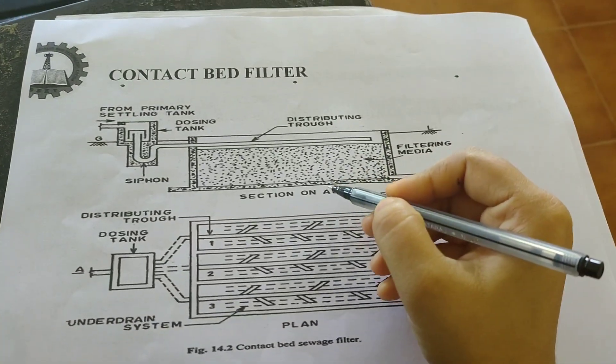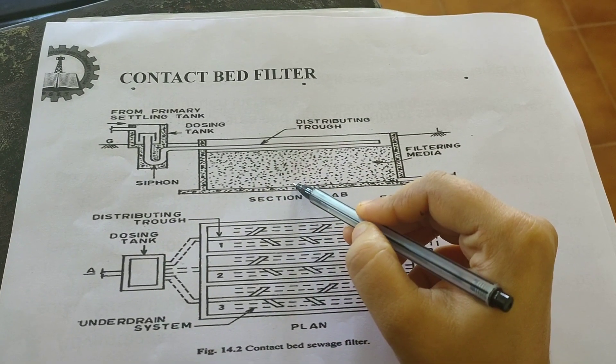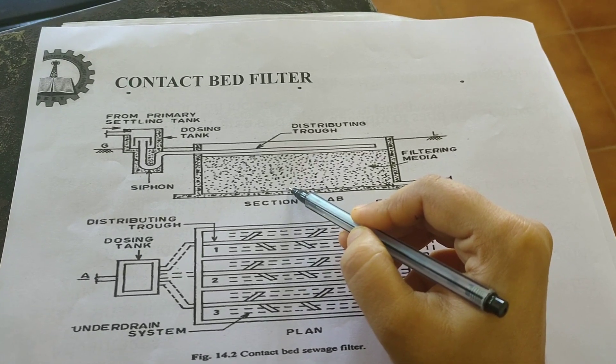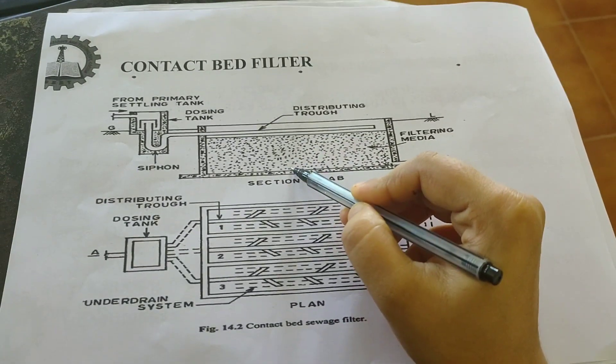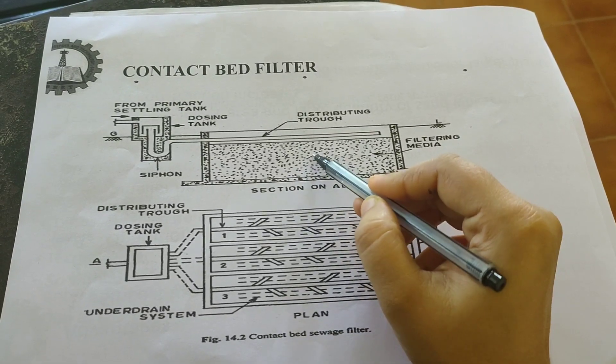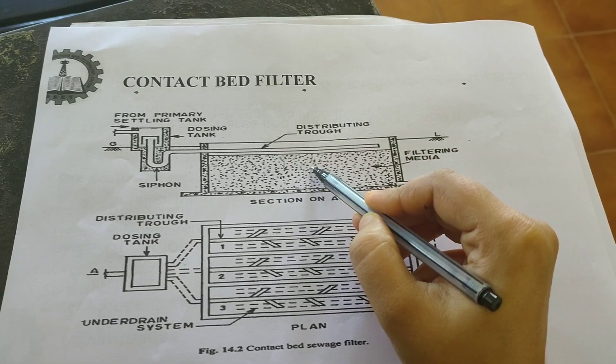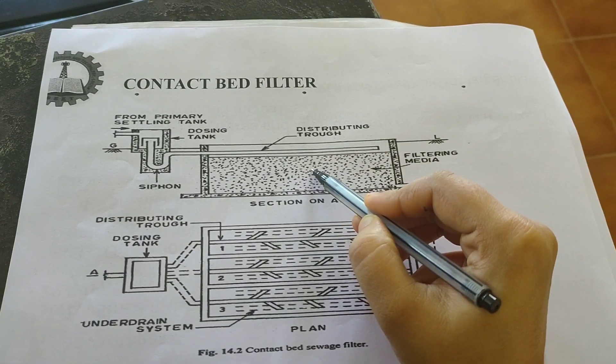This is the pictorial representation of a contact bed filter. You can see this filter is similar to the intermittent sand filter except in two factors.